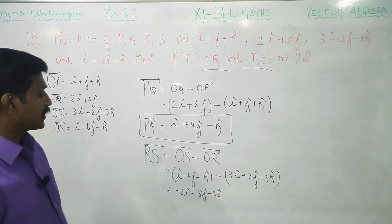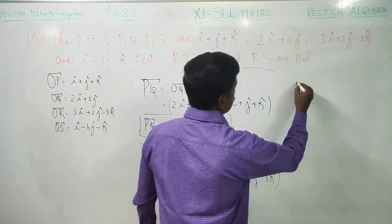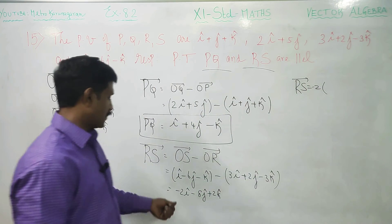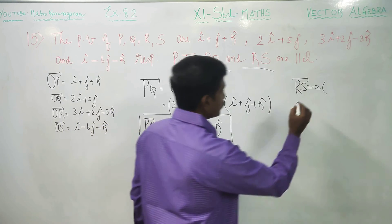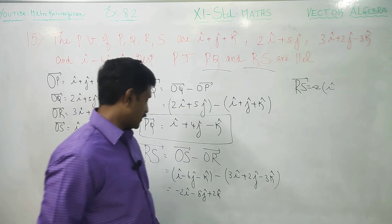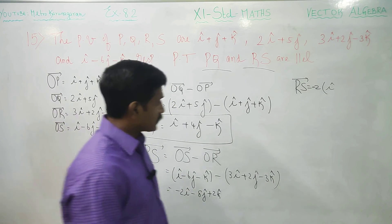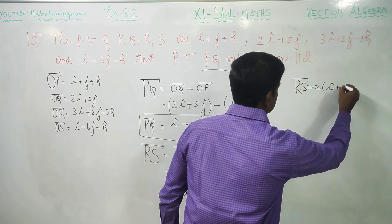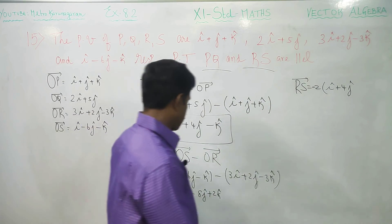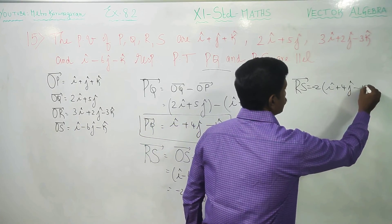I am going to take minus 2 common. RS vector is equal to minus 2 common value, you will be getting I vector, then plus 4J vector. Sorry, minus K vector.